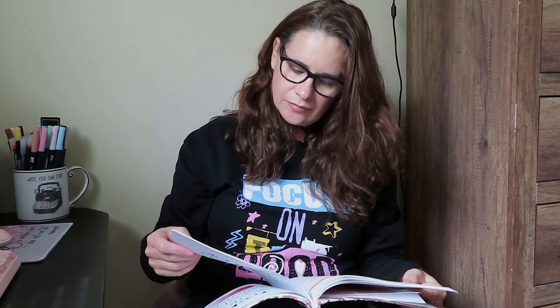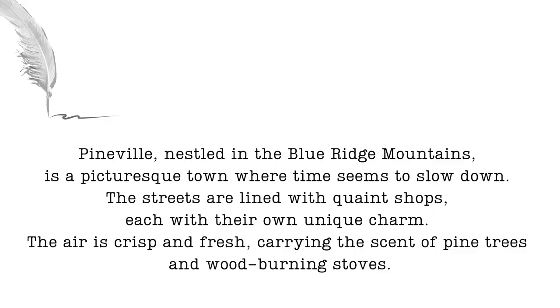Tip number five is about setting the scene. It's important in every story but especially in romance novels. Use it to create an atmosphere and mood that matches the vibe of your story — make it feel almost like a character itself. Use descriptive language to paint a picture that transports readers to a different place and time. Here's my example: 'Pineville, nestled in the Blue Ridge Mountains, is a picturesque town where time seems to slow down. The streets are lined with quaint shops, each with their own unique charm. The air is crisp and fresh, carrying the scent of pine trees and wood-burning stoves.'